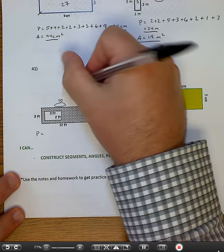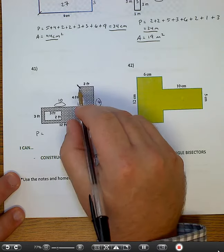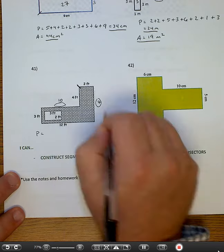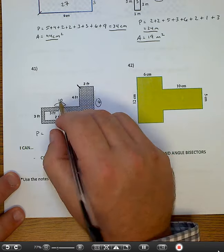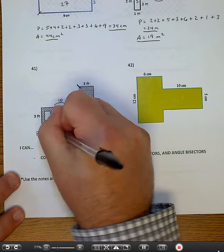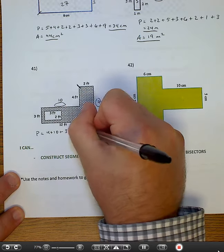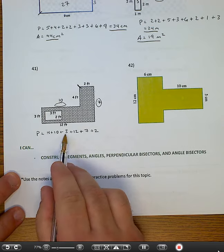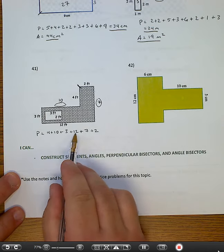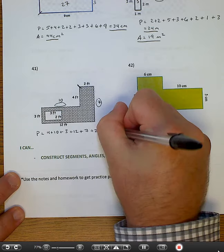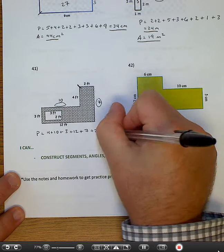I'm going to start right here. Again, that's random. You can start anywhere. Just starting here, I'm going to go counterclockwise. So 4 plus 10 plus 3 plus 12 plus 7 plus 2. So 14, 17, 29, 36, 38. 38 feet is my perimeter.